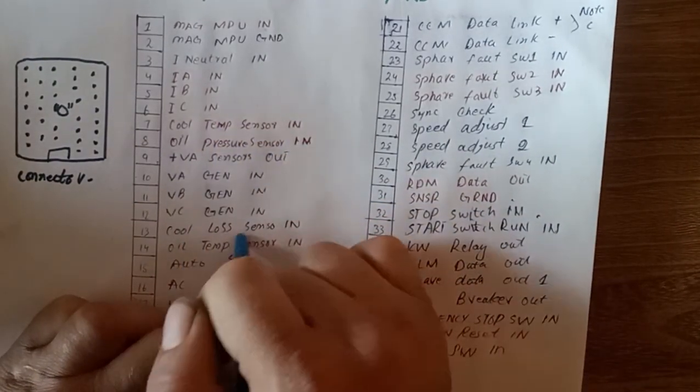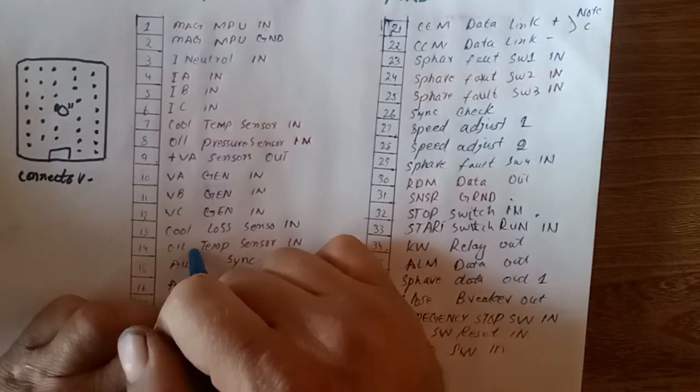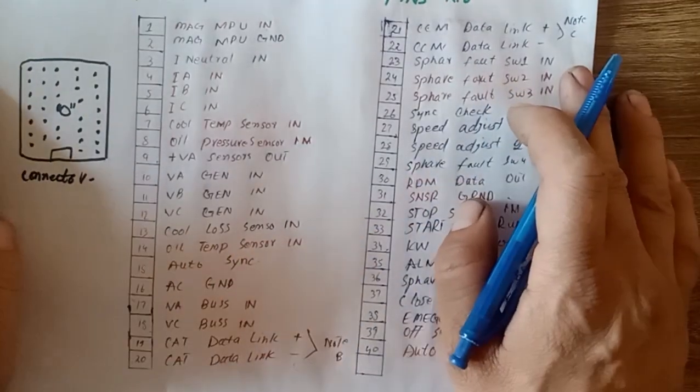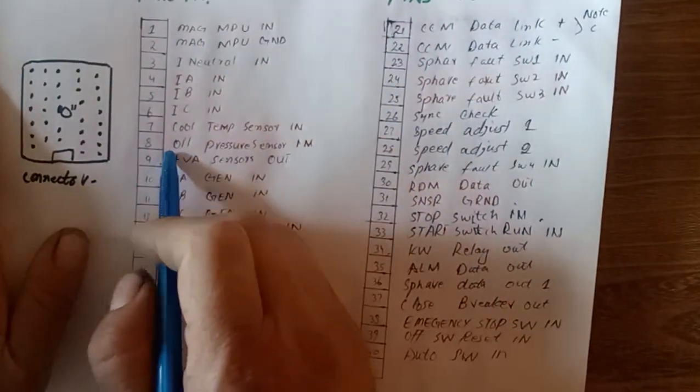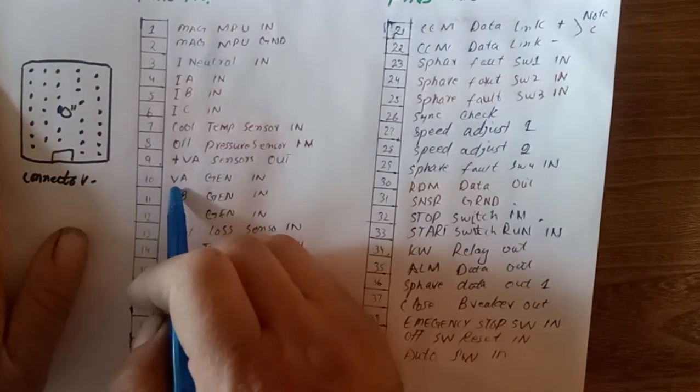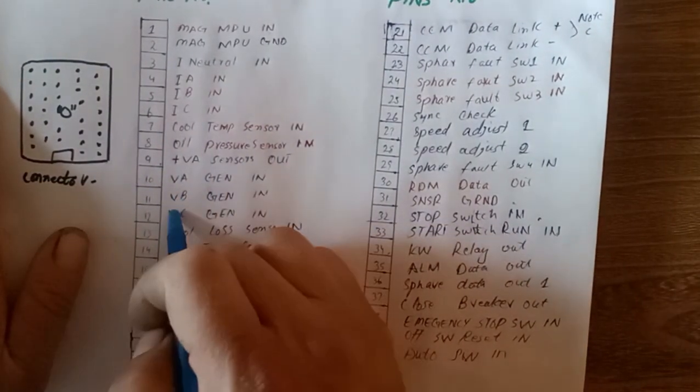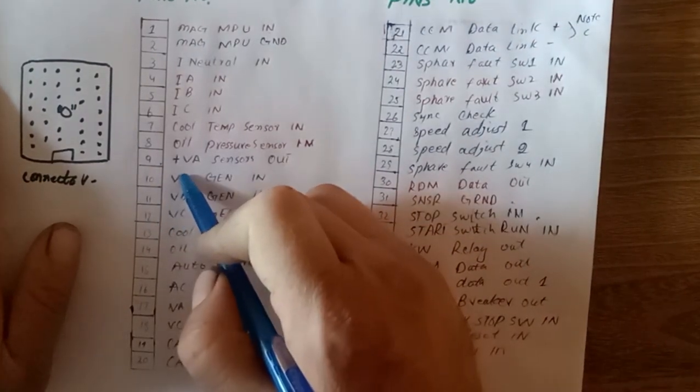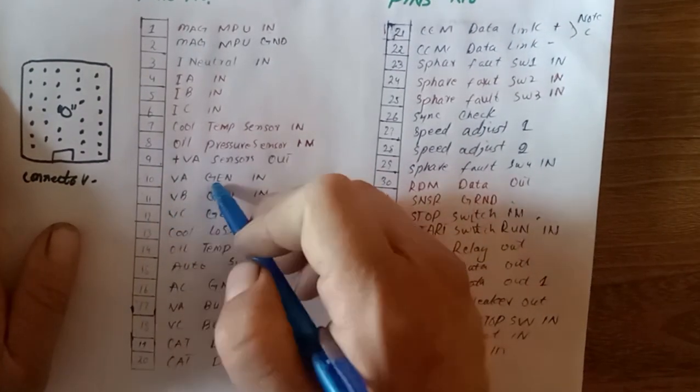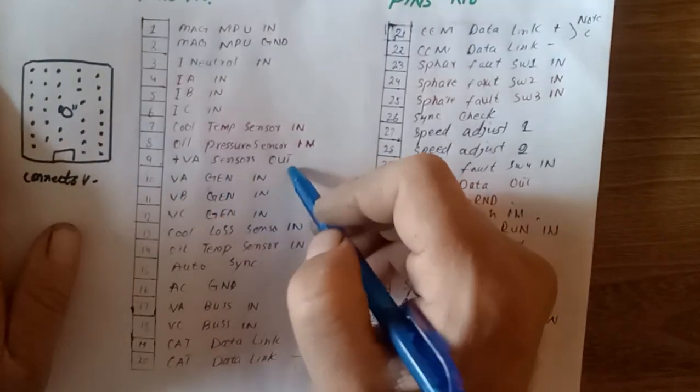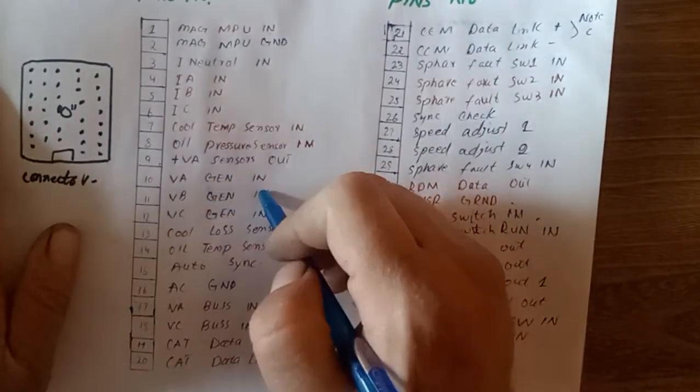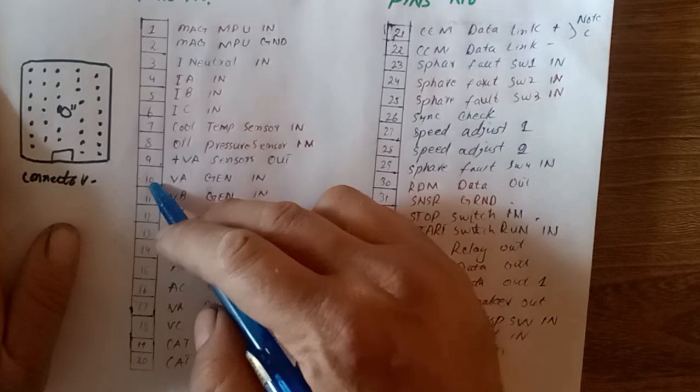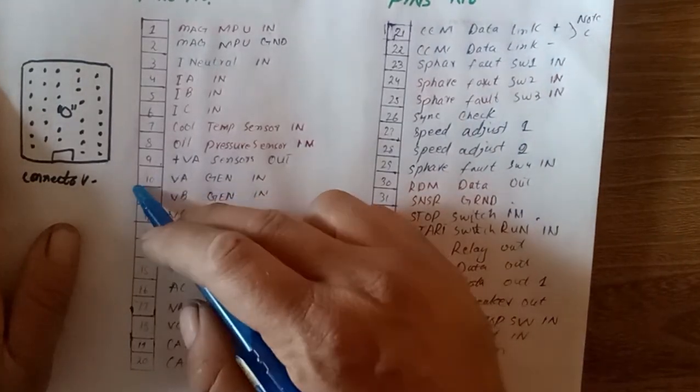VA Gen N, VB Gen N, VC Gen N - these are for your generator L1, L2, L3. N means this is your input for generator phases.